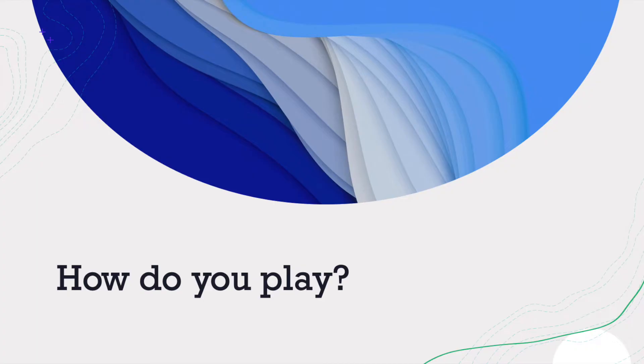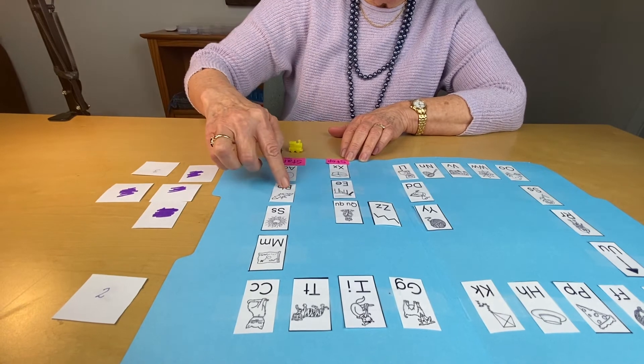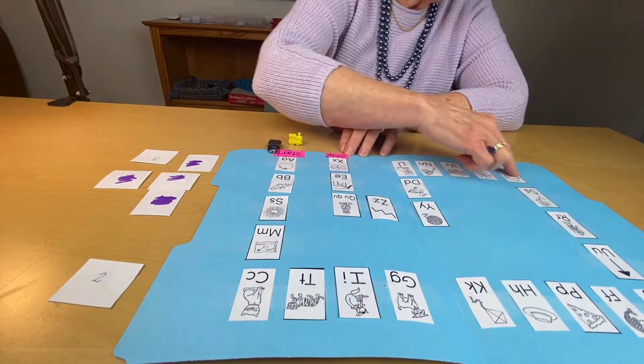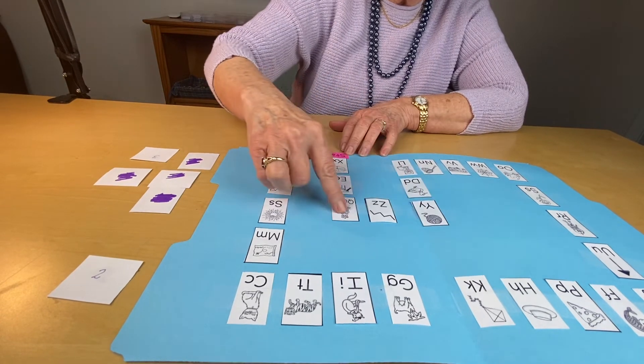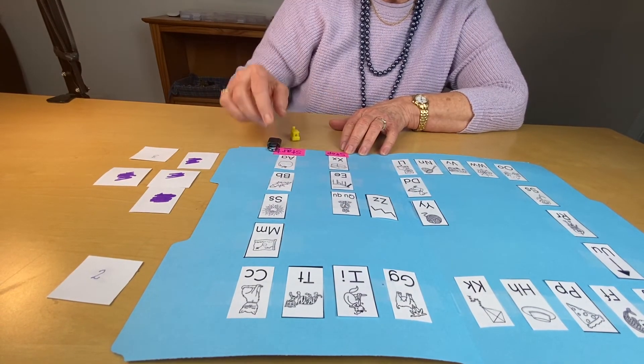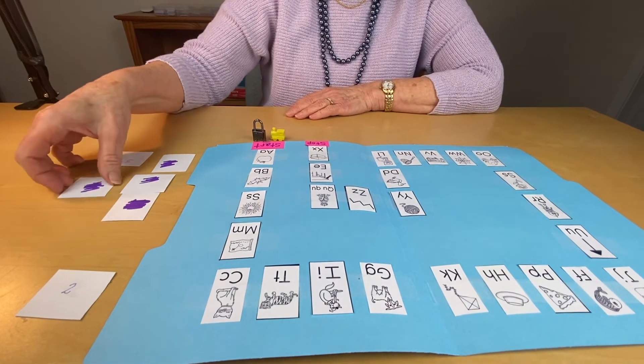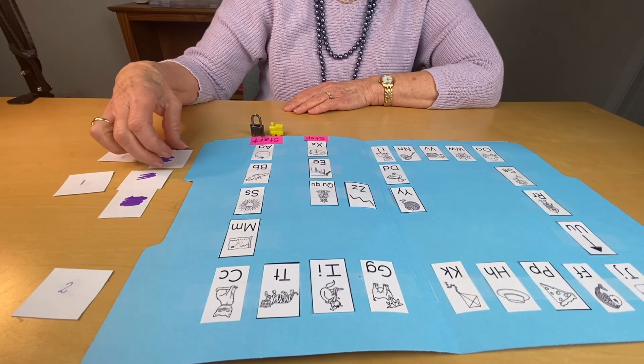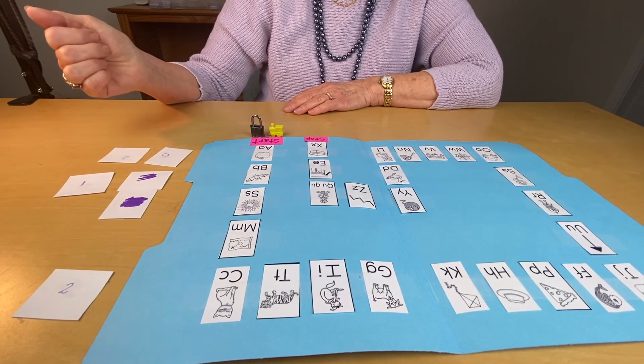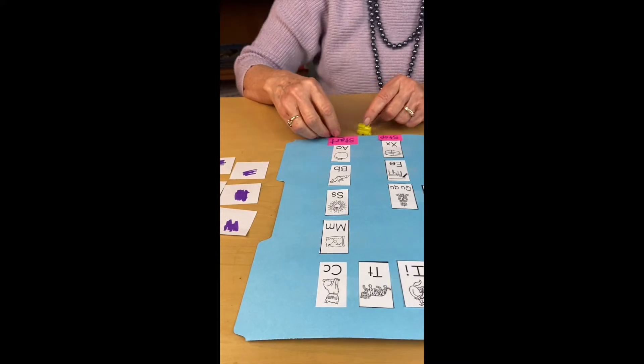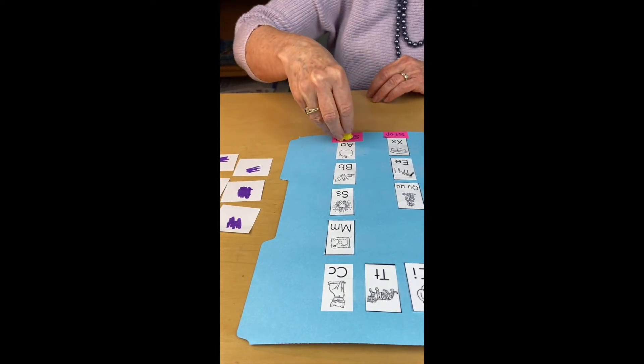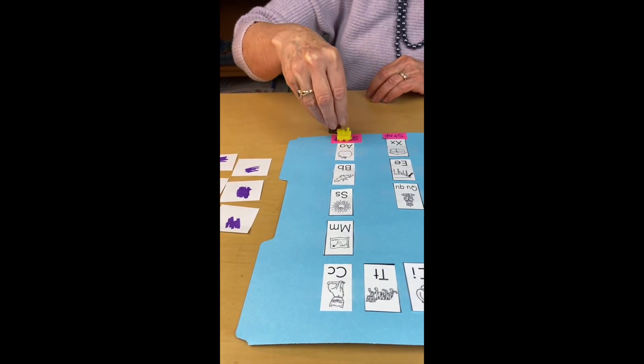So how do you play? This is the start and we go down the track until we get to the stop. On these cards are numbers and we pull a number and it tells us how many hops to make. After you decide who goes first, the piece goes on the start.